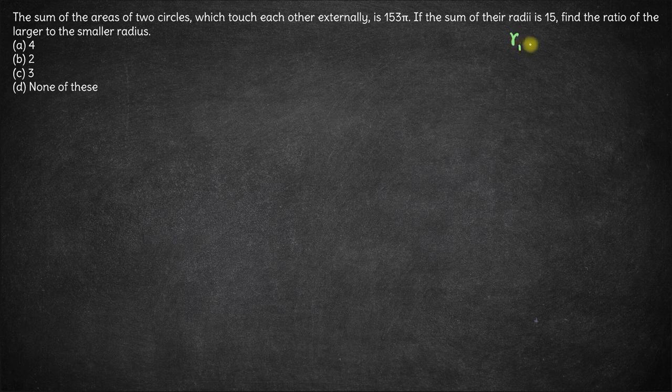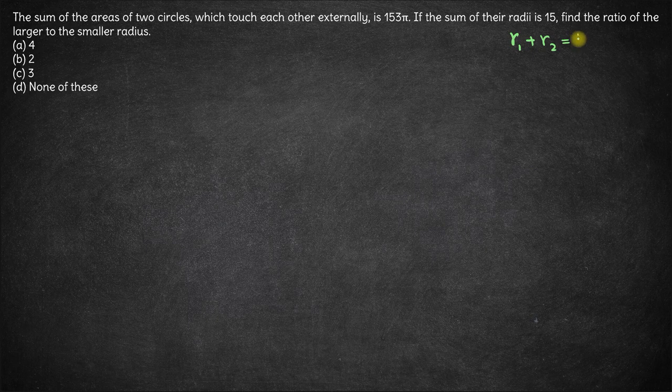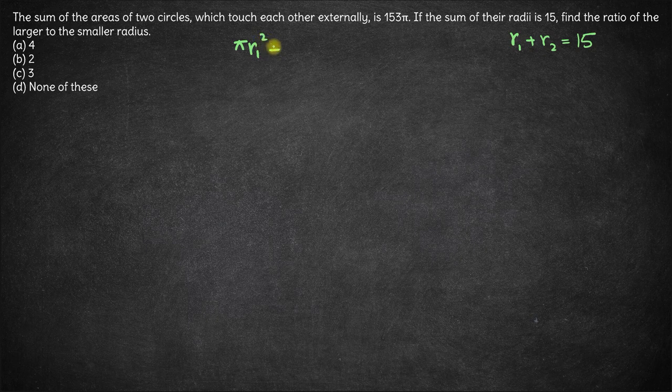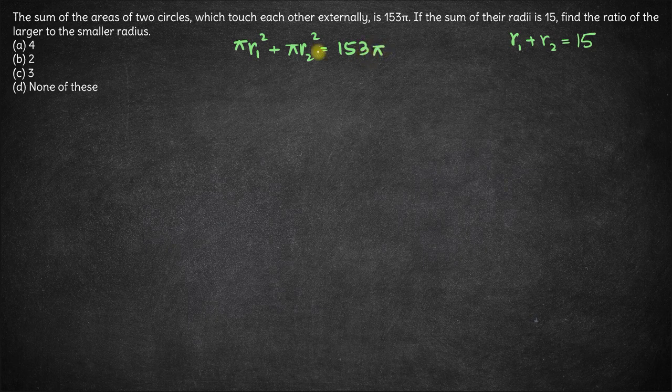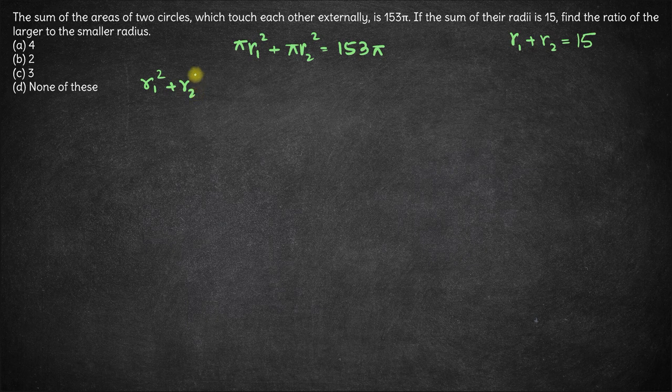Let's say the radii are r1 and r2. We have r1 plus r2 is 15, and the sum of the areas will be πr1² plus πr2² which is 153π. So π here gets cancelled out. We have r1² plus r2² equals 153.